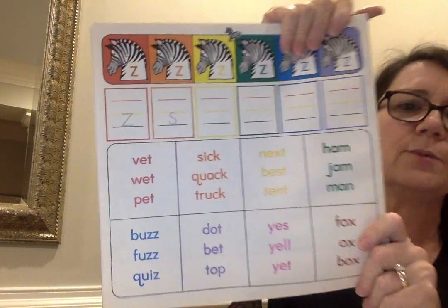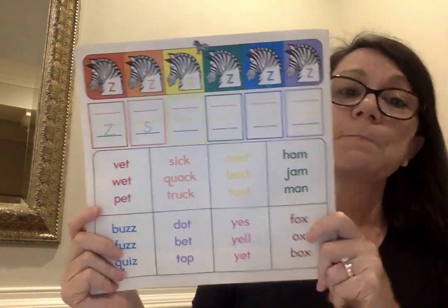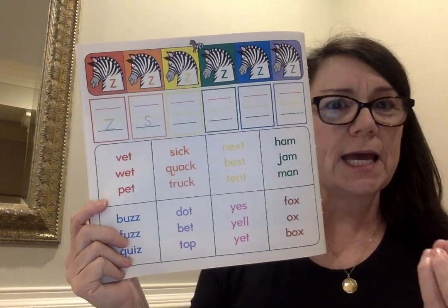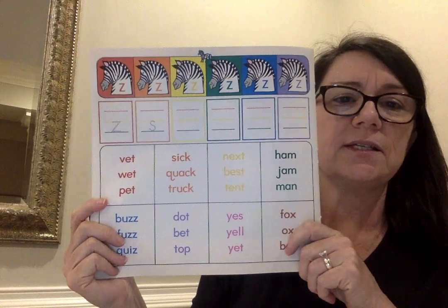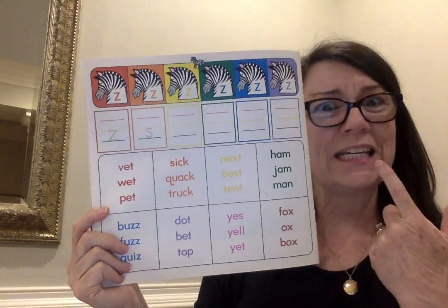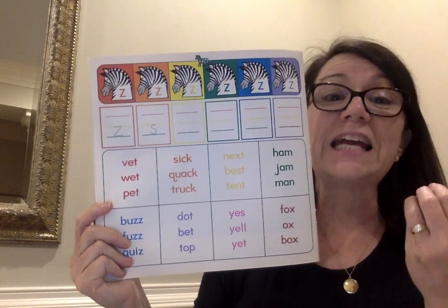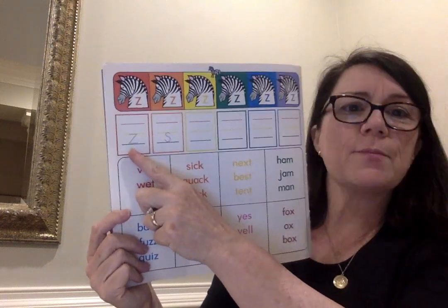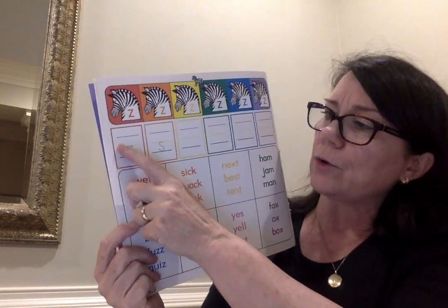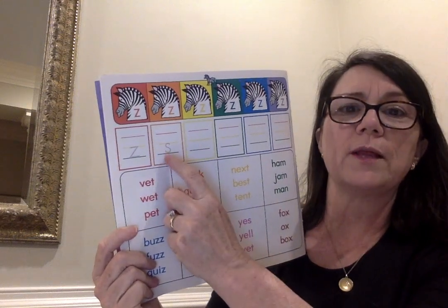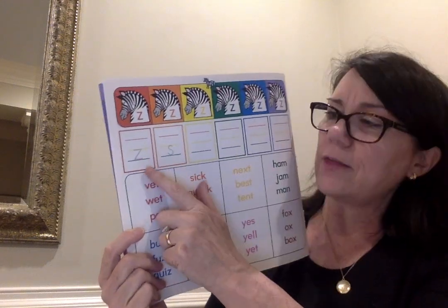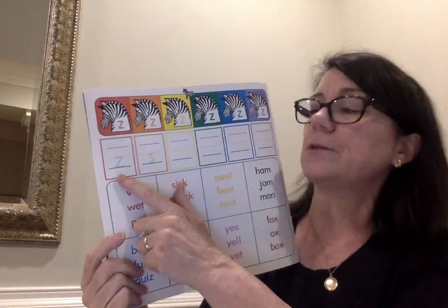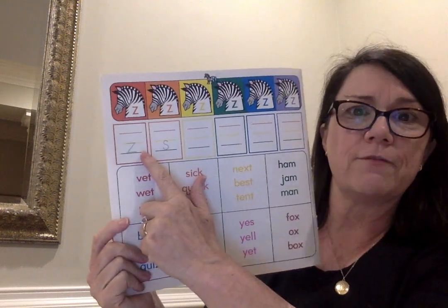You'll notice we have some zebras at the top of our page. A lot of times we have difficulty differentiating between Z and S. Z says Z, and S says S. See how my teeth are together with both those sounds — it's very easy to confuse them. So what we're going to practice: I'll give you a word. If it begins with Z, you're going to write lowercase Z. If it begins with S, you're going to write lowercase S. They were so nice to give you the first two. The first word is zoo — that begins with Z, so you're going to do lowercase Z in the first box.